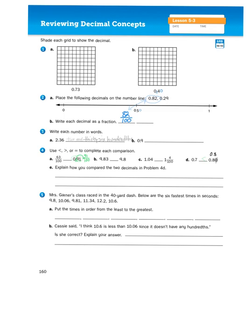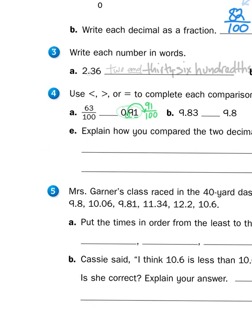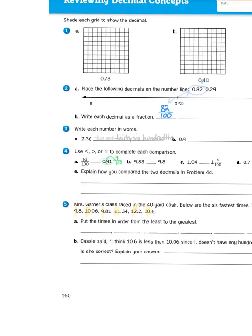So when I'm thinking about values that involve decimals, my first job is to look at the number to the left of the decimal, the whole number. Now, what whole numbers do I have? Well, I've got a nine, a ten, a nine, an eleven, a twelve, and a ten. So two nines, two tens, eleven and twelve. So right away, I can sort these pretty quickly.